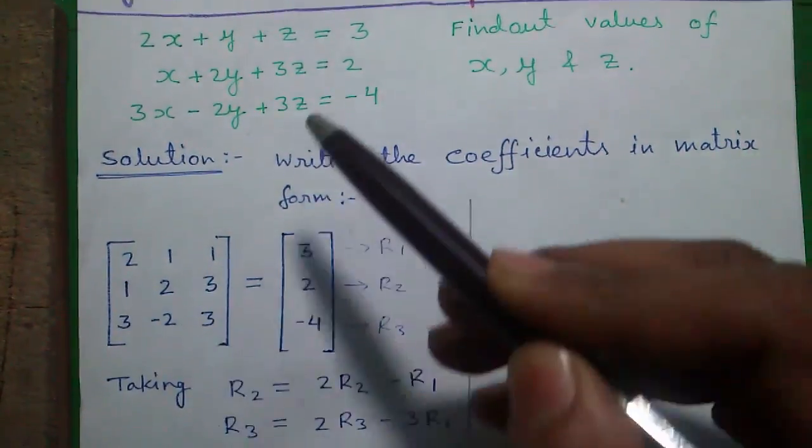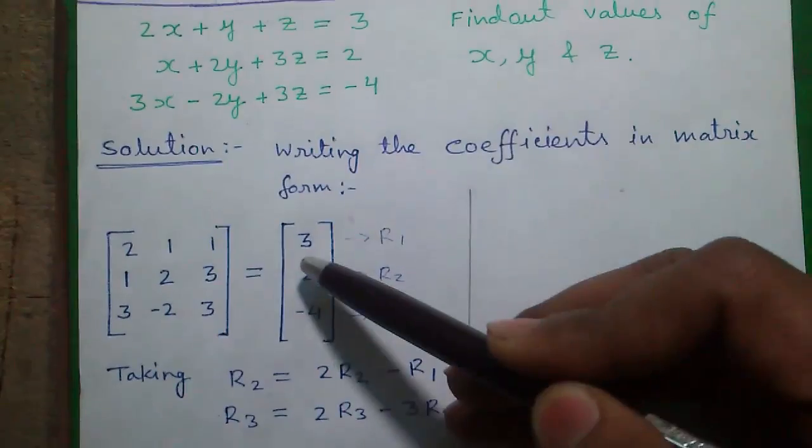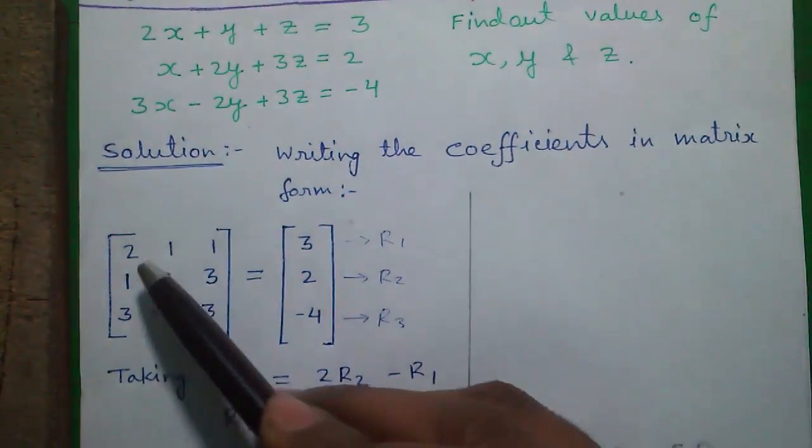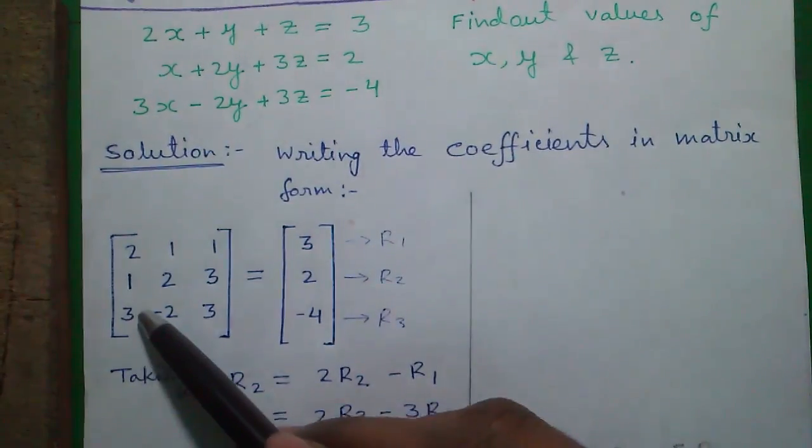And 3, 2, minus 4. This is called the Row 1 or R1, this is R2 and this is R3.